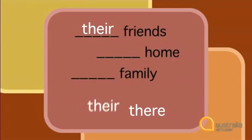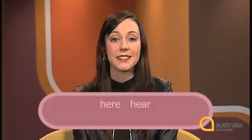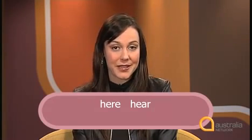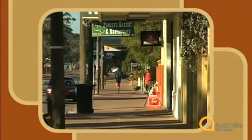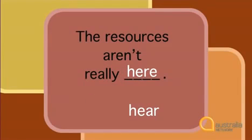Another example of a set of homonyms is h-e-r-e and h-e-a-r — they're both pronounced the same: 'here'. In the clip: 'The resources aren't really here to take care of them.' The context tells us that when Julie says 'here', she means in their immediate location. She is using h-e-r-e.